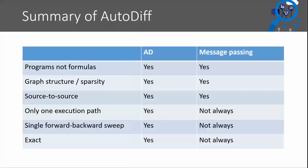Here's a table summarizing all the properties of autodiff, with a column for message passing to show how things change. AD uses programs instead of formulas - same for message passing. It exploits graph structure and sparsity - same for message passing. You can do it via source-to-source transformation - same for message passing. Then there are three properties of AD that I would claim are not as good as you might think: AD only explores one execution path, it uses a single forward-backward sweep, and the final and I think worst property is that it's exact - it always computes the exact derivative. Message passing will explore alternative paths, may require multiple sweeps, and will not always be exact.